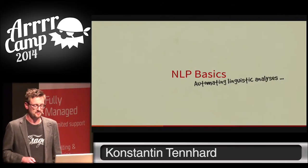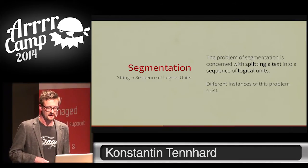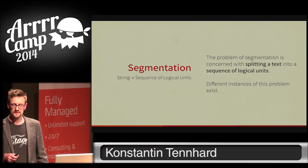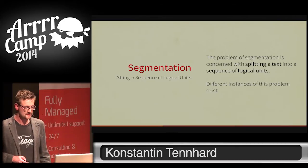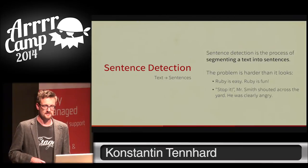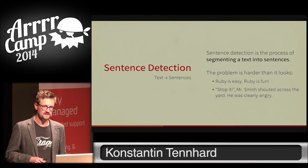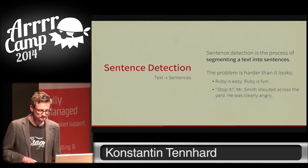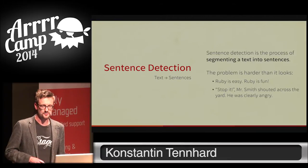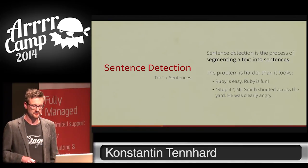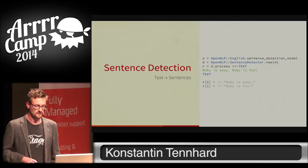Let's start with basic NLP tasks you always need to do when working with textual data. There's the problem of segmentation, which deals with splitting a text into a sequence of logical units. The first instance is sentence detection — think of reading a large document and splitting it into individual sentences. You might think you simply look for punctuation marks, but that wouldn't work for cases containing direct speech and acronyms. So OpenNLP provides the appropriate mechanisms to deal with this.